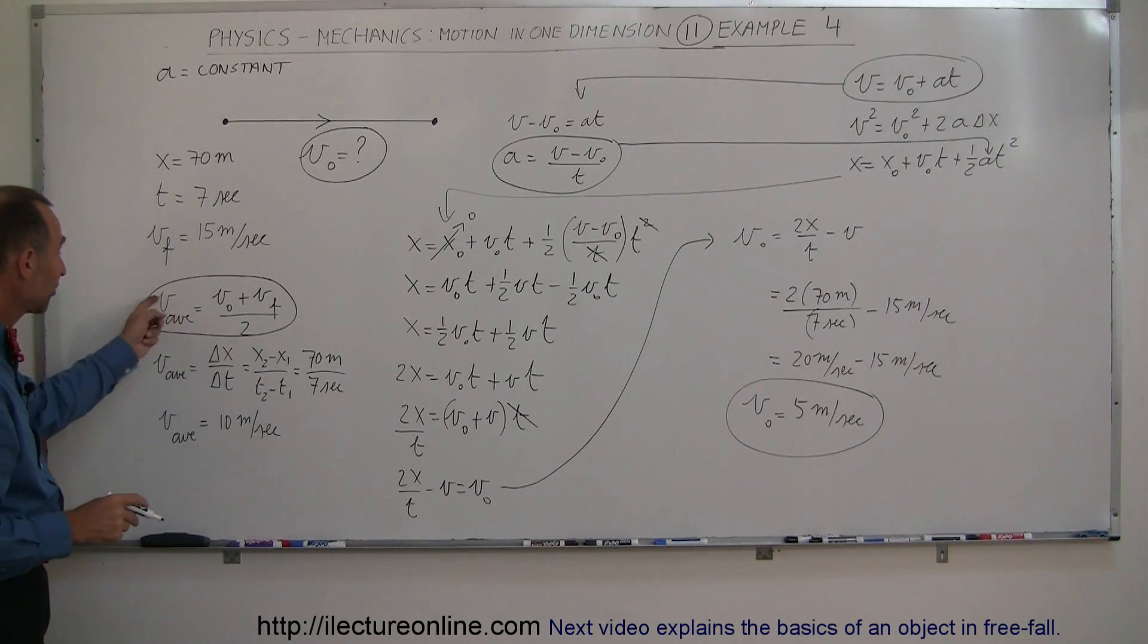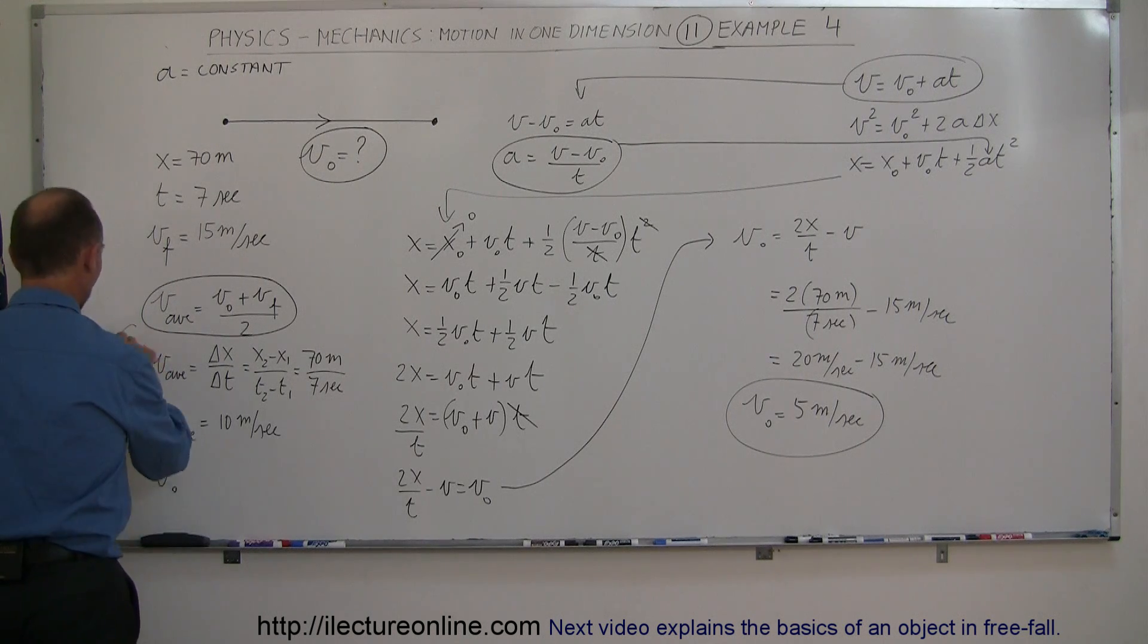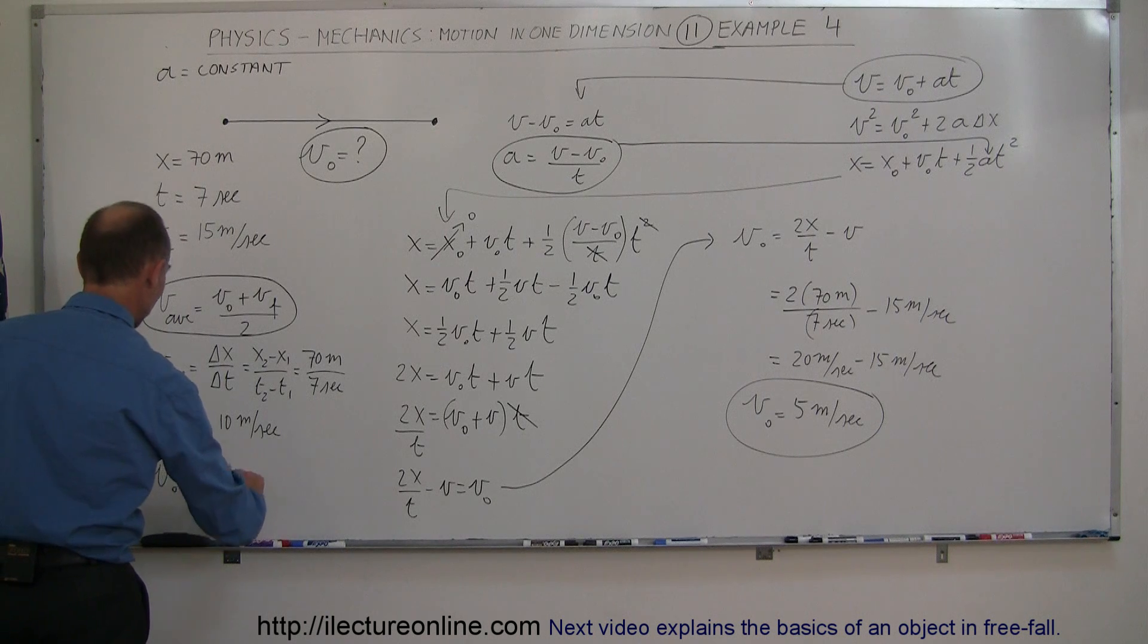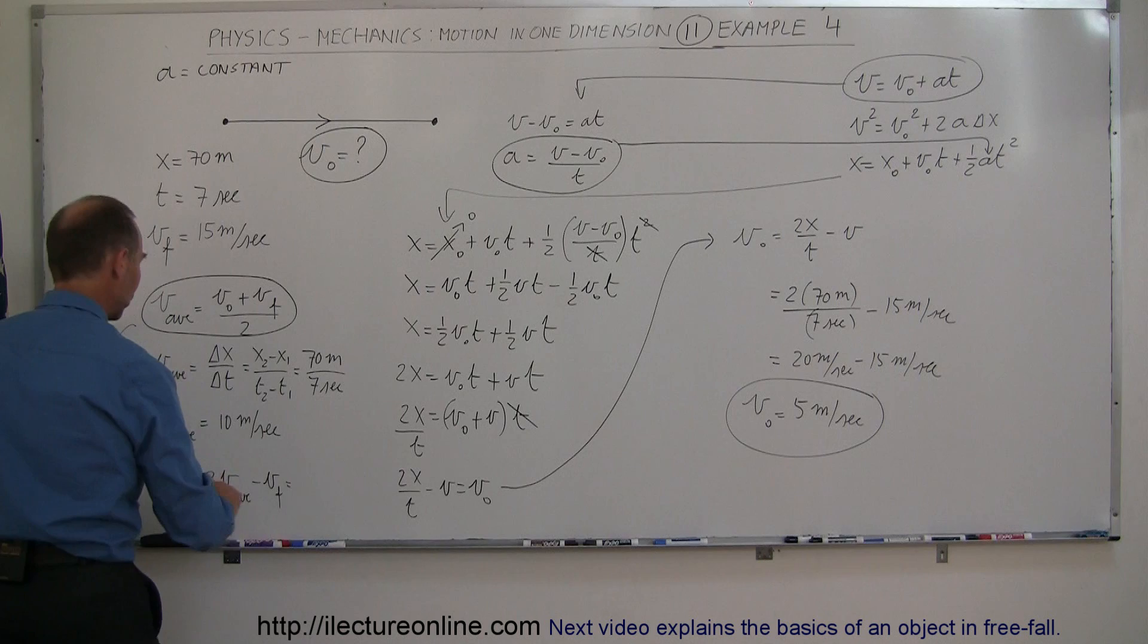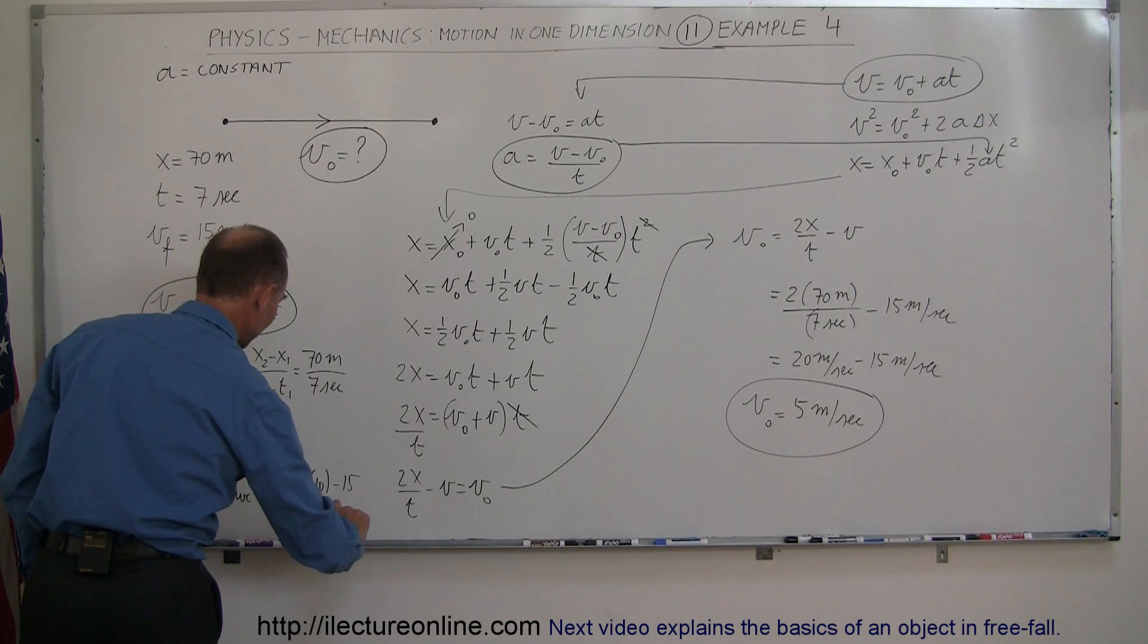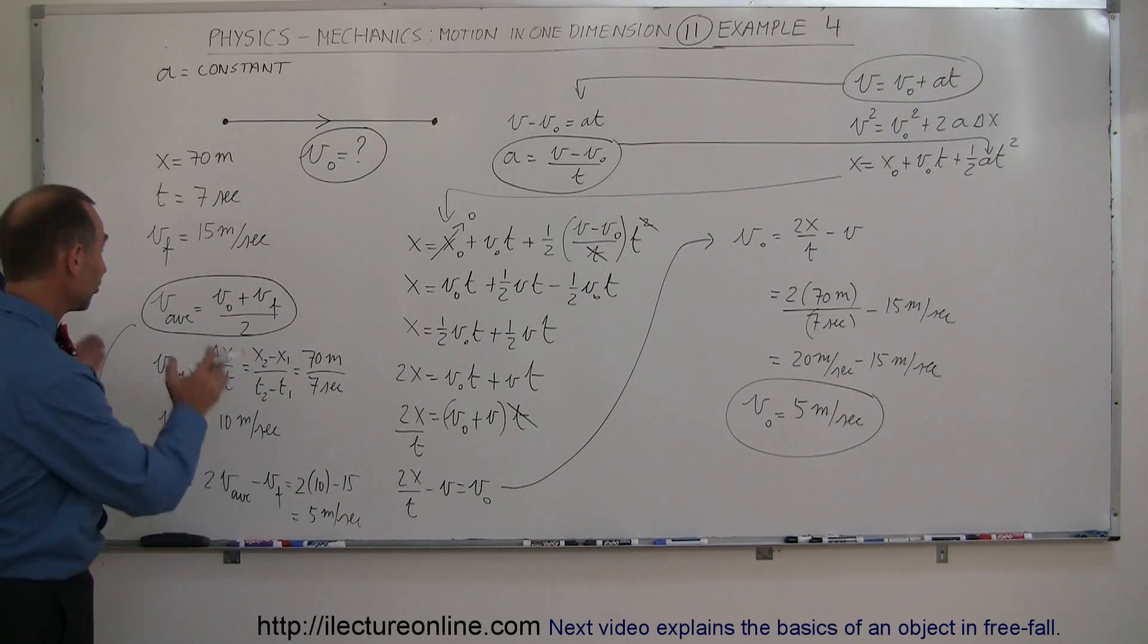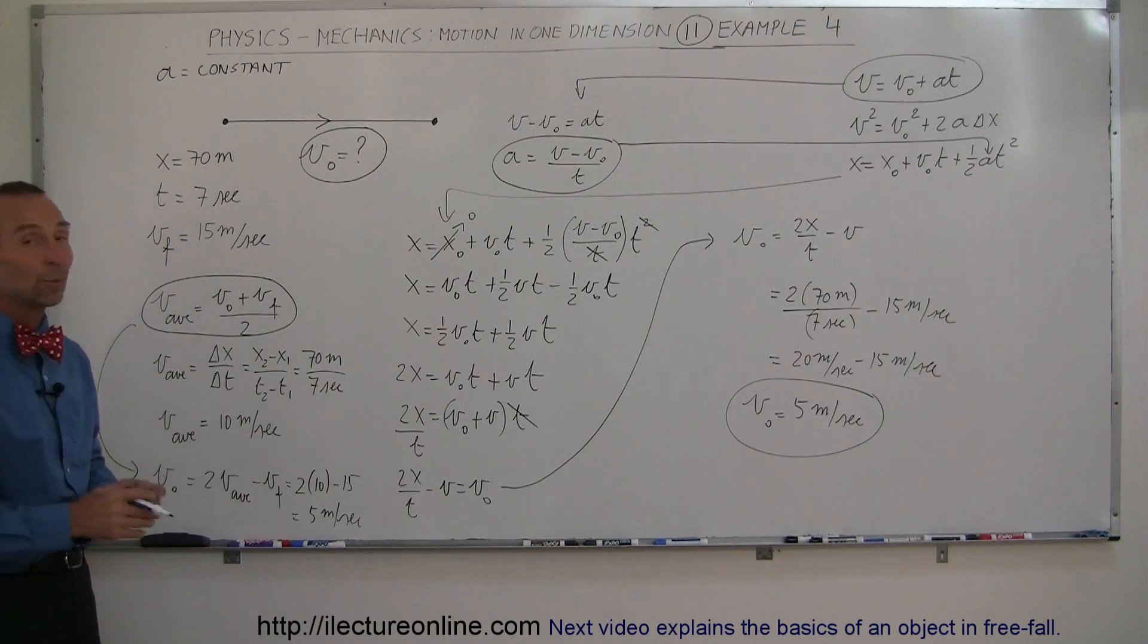Just multiply both sides by 2, subtract V final from one side, and I get V initial. So this equation then collapses into V initial equals 2 times the average velocity minus V final. And so that would be 2 times 10 minus 15, or 5 meters per second. So notice that by using the definition of average velocity and knowing how to calculate the average velocity, we can very easily solve for the problem.